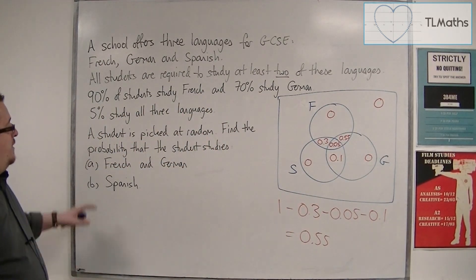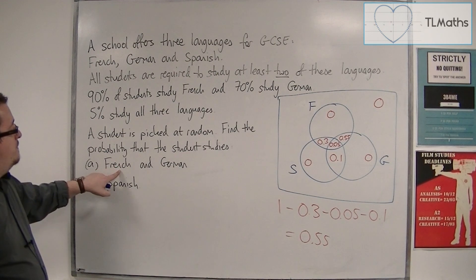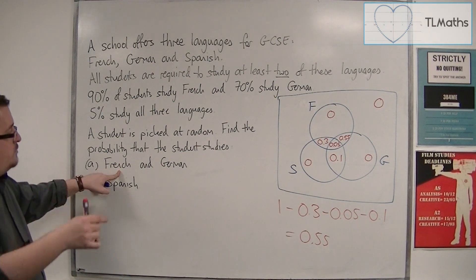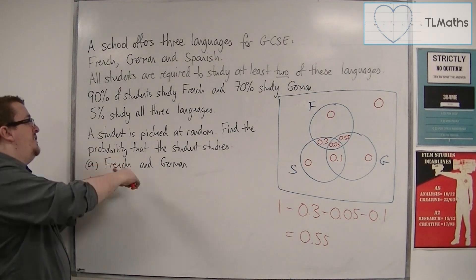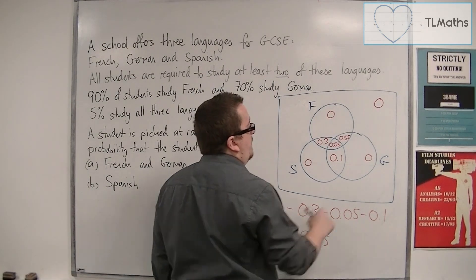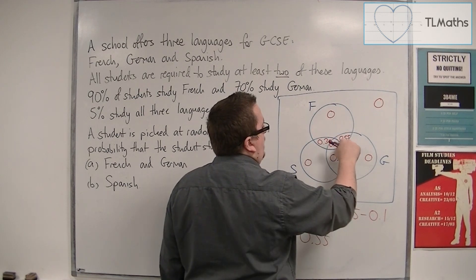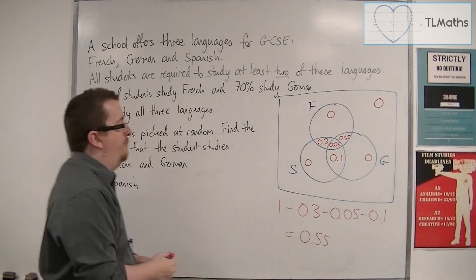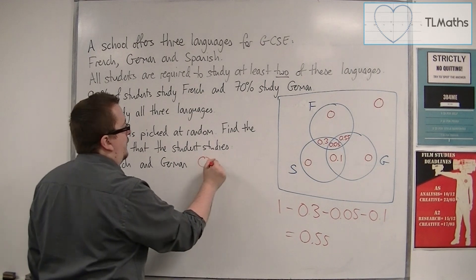So if I'm looking at the probability of a student being picked at random for the probability of them studying French and German, well, French and German is where French and German overlap. And that's 0.55 and 0.05. So that's 0.6.